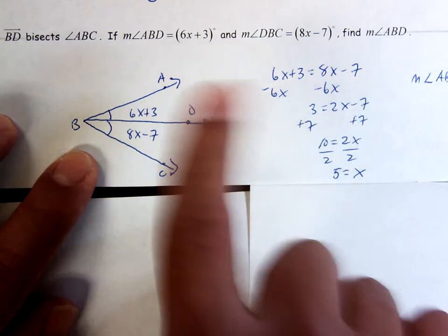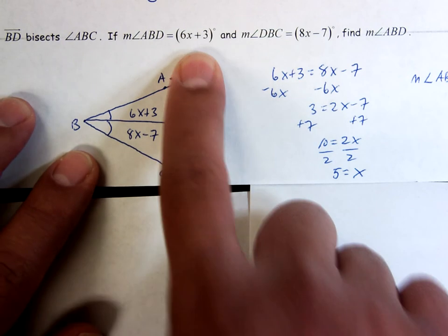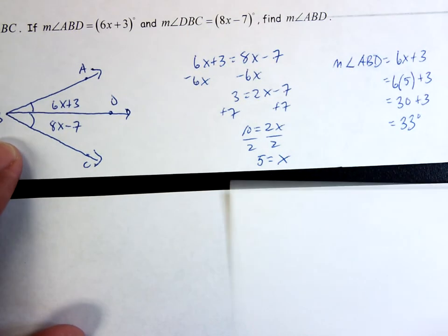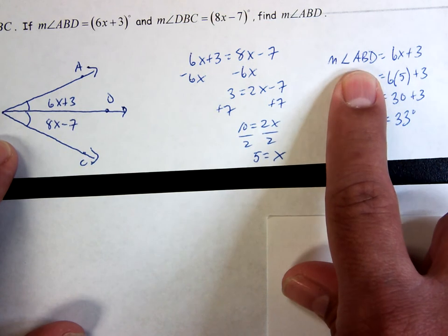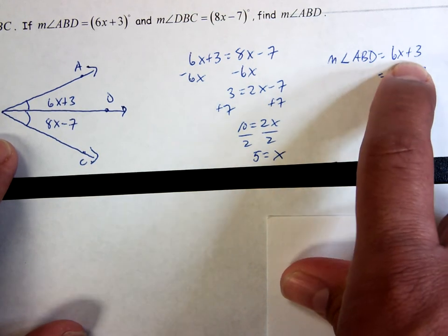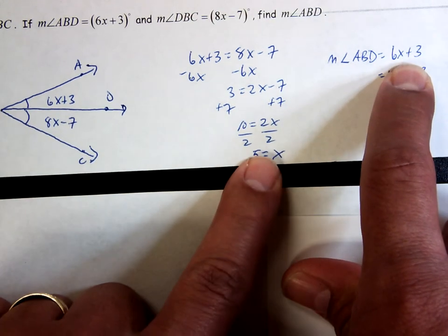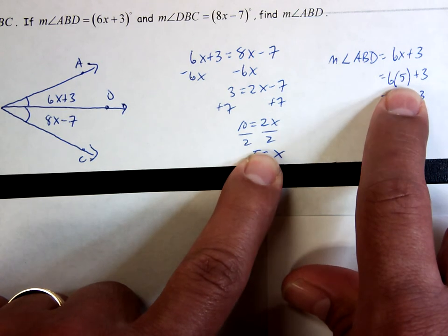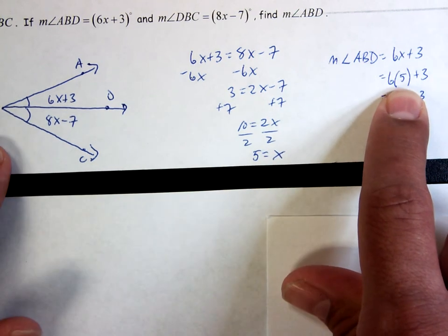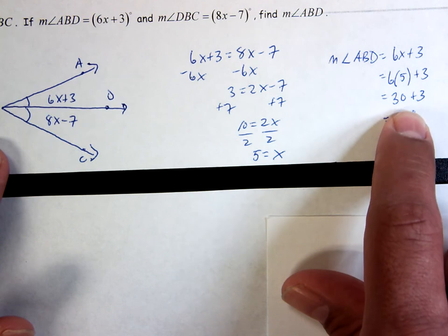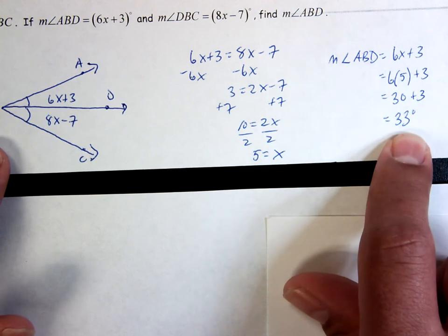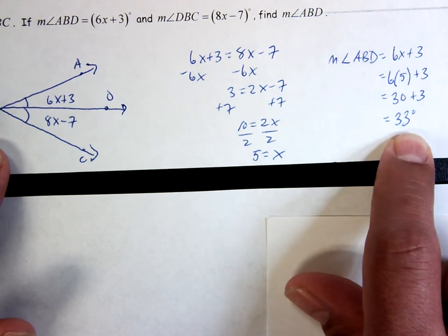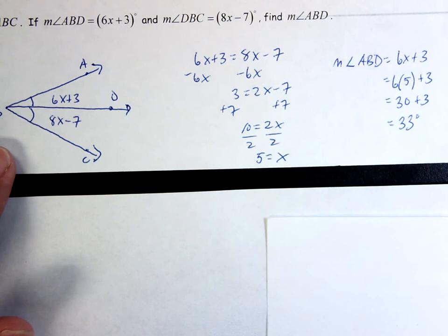Remember, ABD is equal to 6X plus 3, but now I know that X equals 5. So all I do is I go back. The measure of angle ABD is equal to 6X plus 3, but now I just figured out that X is 5. So I just plug in 5 for X. So 6 times 5 plus 3, which is 30 plus 3, which is 33 degrees. That's all I got for you today. Thank you.